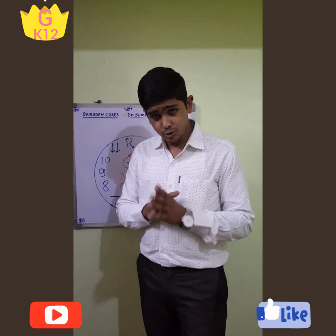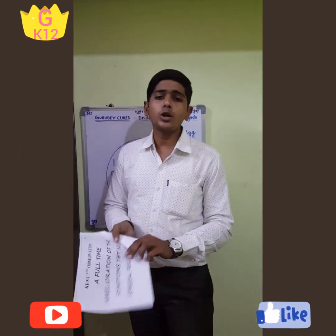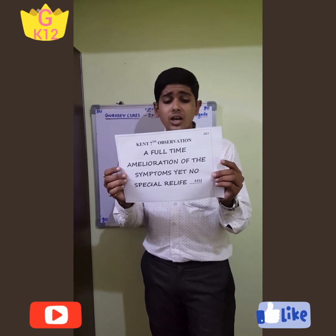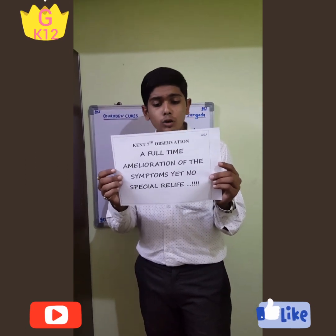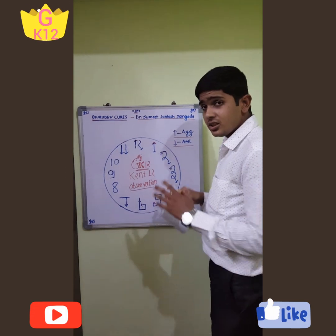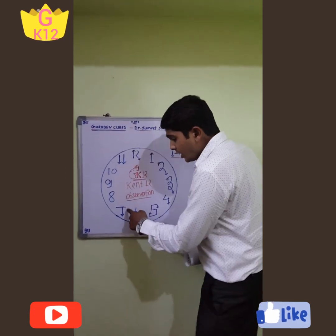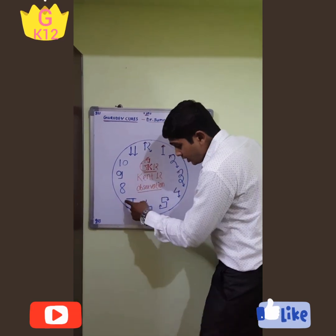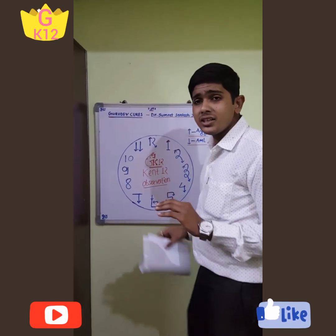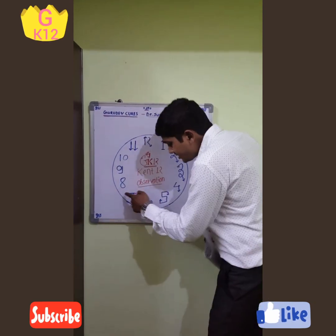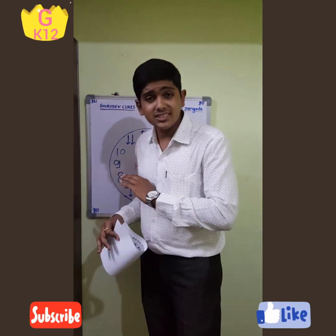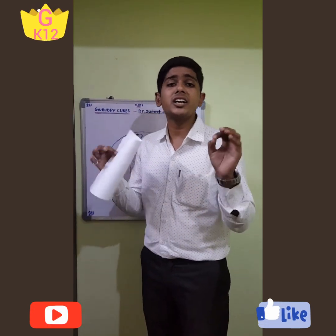Now for the seventh observation by Dr. Kent: a full amelioration of the symptoms yet no special relief. This type of condition occurs in incurable cases. The seventh number is modified to show that the patient's complaints are going toward relief — the patient is feeling quite better — but the underlying disease remains as it is. The patient gets relief from symptoms only, not from the disease itself.